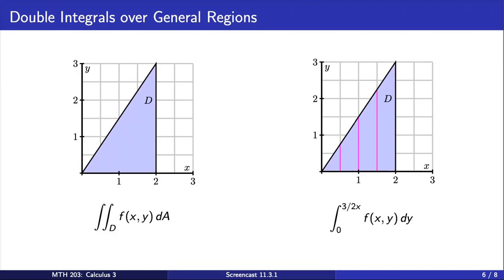Next, we see that we want to take these slices of varying height from x equals 0 to x equals 2. So our second integral that we evaluate with respect to x will have constant limits from 0 to 2.